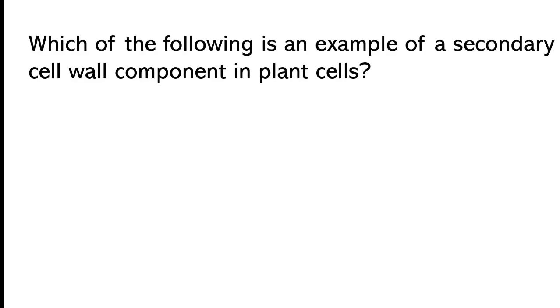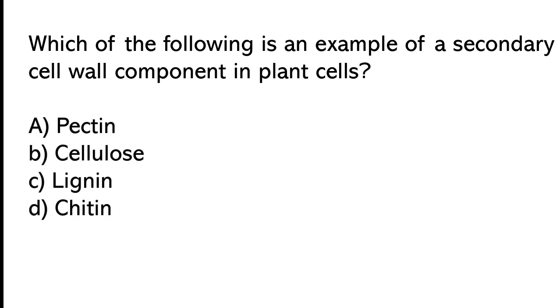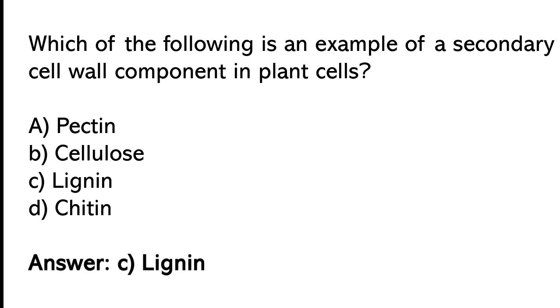Which of the following is an example of a secondary seal wall component in plant seals? Fectin, cellulose, lignin, or chitin. The correct answer is option C: Lignin.